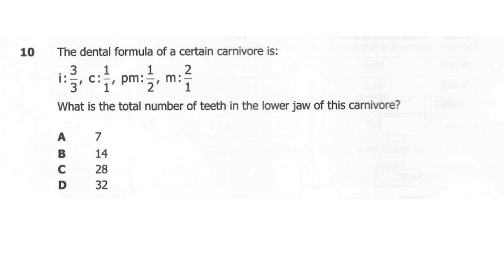Question 10. The dental formula of a certain carnivore is: incisors 3/3, canines 1/1, premolars 1/2, molars 2/1. What is the total number of teeth in the lower jaw of the carnivore? A: 7. B: 14. C: 28. D: 32. So what's the correct answer? Is it A, B, C, or D?